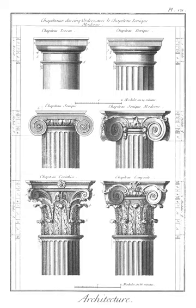Coping: the capping or covering of a wall. Corbel: a structural piece of stone, wood, or metal jutting from a wall to carry a superincumbent weight.